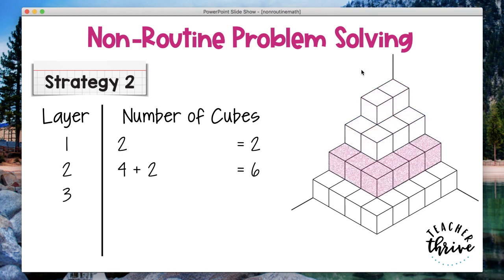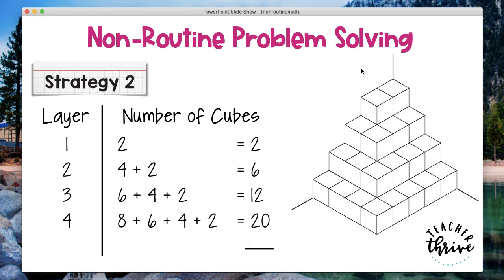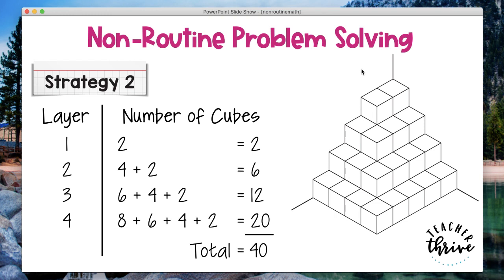For the third layer, the visible cubes you can see number six. You also have the four visible ones from above and then the two, so you would have six plus four plus two, giving 12 cubes in that layer. For the fourth layer, adding up all subsequent layers you would see it's eight plus six plus four plus two, and then you get your total of 40.